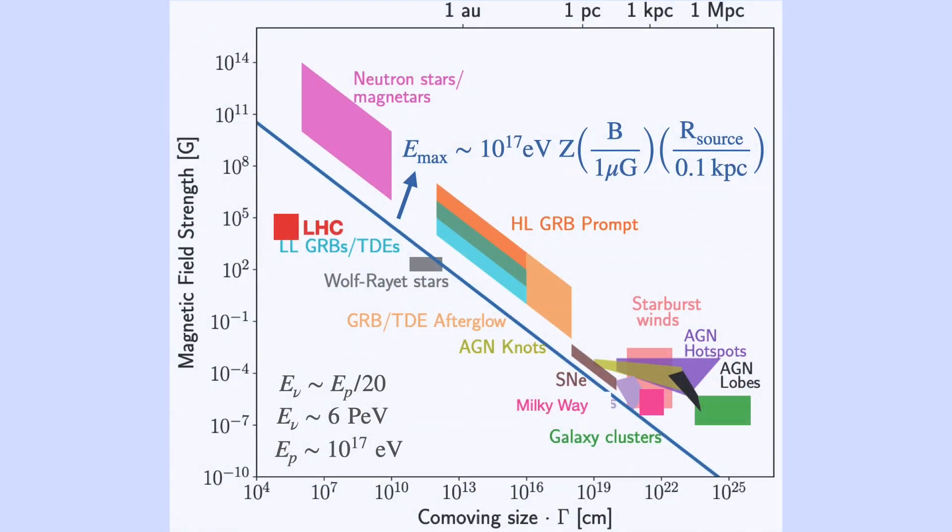To visualize this, here we have a plot of the different types of sources for cosmic ray accelerations and how they depend on their comoving size, or radius, and their magnetic field strength. Here, this blue line represents the Helas criterion requirement, and everything above this blue line can be considered a source for cosmic ray acceleration.